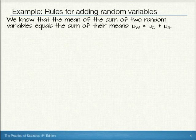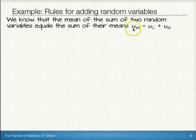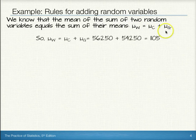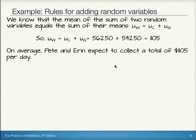We know that the mean of the sum of two random variables equals the sum of their means. That is, the mean of W will simply be the mean of C plus the mean of G, or in this case, $562.50 plus $542.50, which equals $1,105. On average, Pete and Aaron would expect to collect a total of about $1,105 per day.